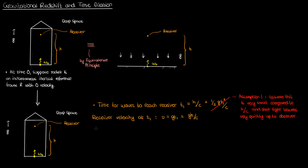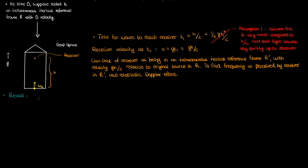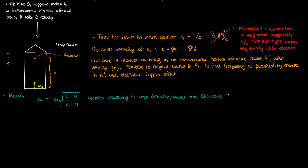At this point, the receiver can be thought of as being in his own instantaneous inertial reference frame R'. The source, which started off as stationary in reference frame R, has emitted an electromagnetic wave directly towards him while he is moving away from that source at an instantaneous velocity of gH over C. To determine the frequency omega the receiver perceives, we use the relativistic Doppler effect. If an electromagnetic wave is emitted with frequency omega naught in the original source's reference frame, then the frequency omega measured by a receiver traveling along the same axis as the wave — moving away from the source — is given by the longitudinal Doppler effect equation.